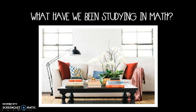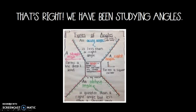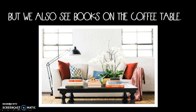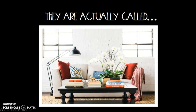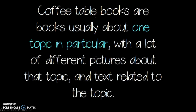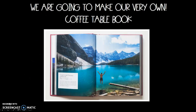What have we been studying in math? That's right, we've been studying angles. In this picture we see a lot of angles, but we also see books on the coffee table. They are actually called coffee table books. Coffee table books are books usually about one topic in particular, with a lot of different pictures about that topic and text related to the topic.